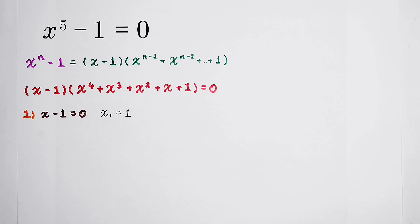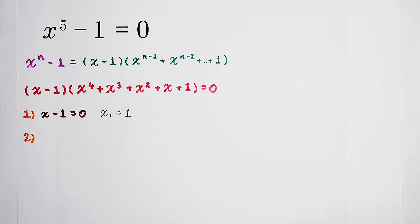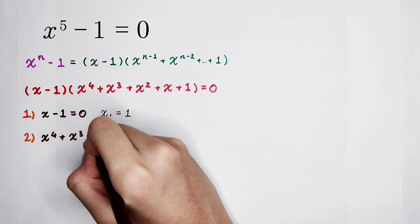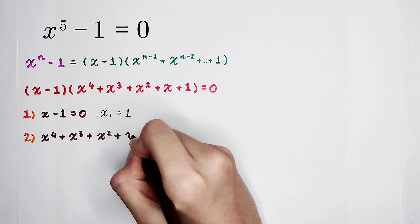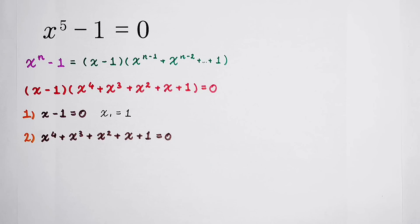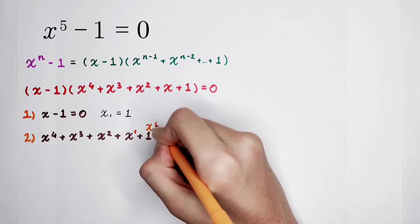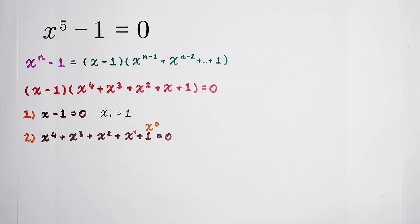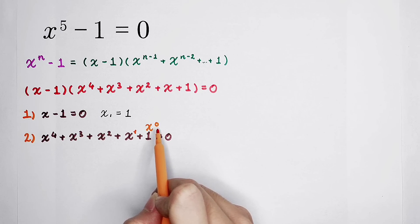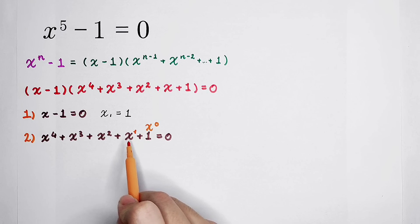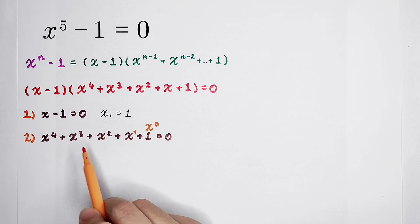However, we have a second case as well. Our second case is when this factor equals 0 — it is not so easy to deal with. x to the power 4 plus x cubed plus x squared plus x plus 1 equals 0. If we regard the last x term as exponent 1 and the constant as x to the power 0, the sum of symmetric exponents pairs is always 4.